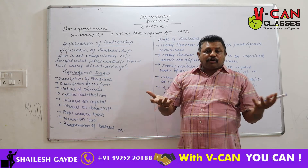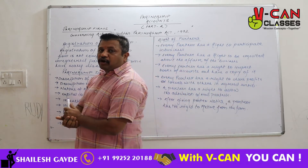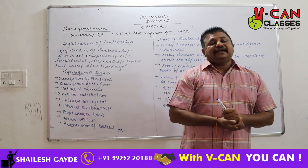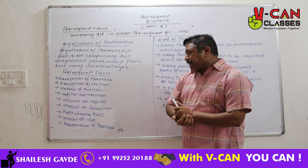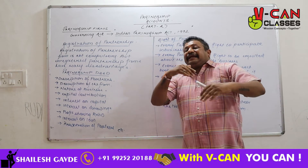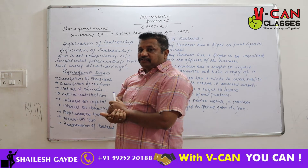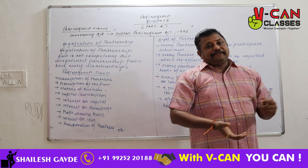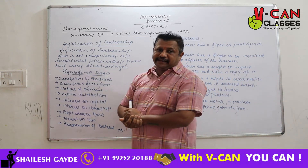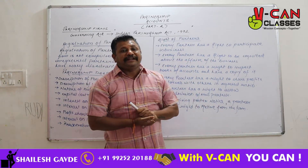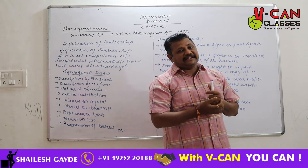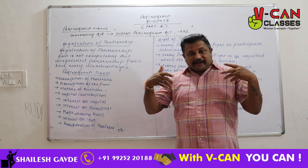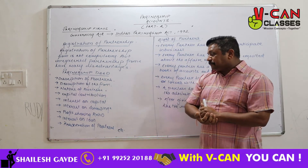The capital contribution — the amount of capital contributed by each partner — is specified. Interest on capital is also specified. If any partner has done any drawings, the rate of interest on drawings is also specified. The profit sharing ratio is also specified in the partnership deed.